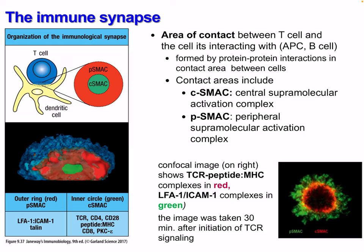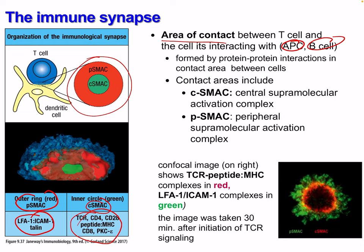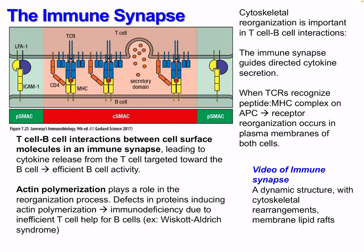This interaction has been labeled the immune synapse, analogous to neural synapses. This is the area of contact between a T cell and the cell it's interacting with — usually an APC or B cell — formed by protein interactions in the contact area. These contact areas include the C-SMAC, which is the central supramolecular activation complex, and the P-SMAC, which is the peripheral supramolecular activation complex. The outer ring is the P-SMAC and the inner circle is the C-SMAC, involving different molecular components.